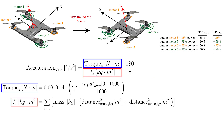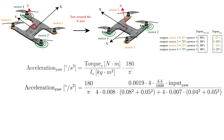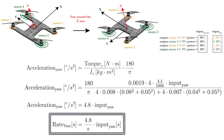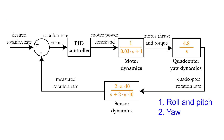Now we develop the equations necessary to calculate the acceleration in the yaw direction. Integrating them in the equation eventually gives another very simple transfer function after doing a Laplace transform similar to the one seen earlier. This means that we now have a third transfer function that describes the quadcopter drone yaw dynamics.